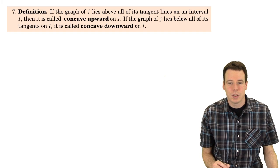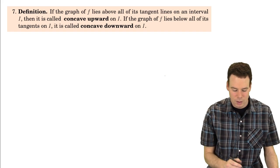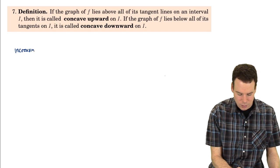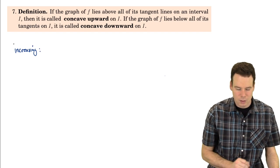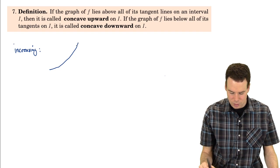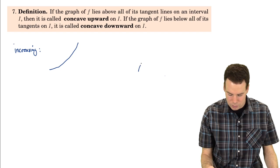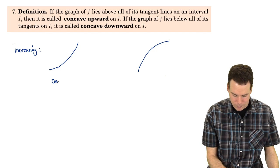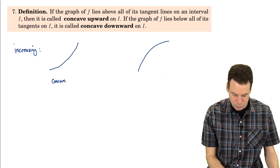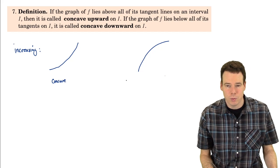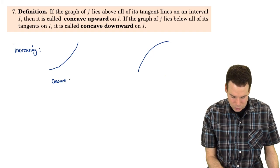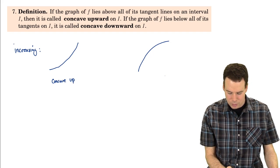With this definition we can make the connection between the second derivative and concavity, using a few different pictures. We're going to look at the possible different cases. A function that's increasing could be increasing in a concave up way, or in a concave down way. Of course it could be an increasing straight line, in which case the second derivative is zero and it's not very interesting for this analysis. So we'll just look at the cases where the curve is bending.